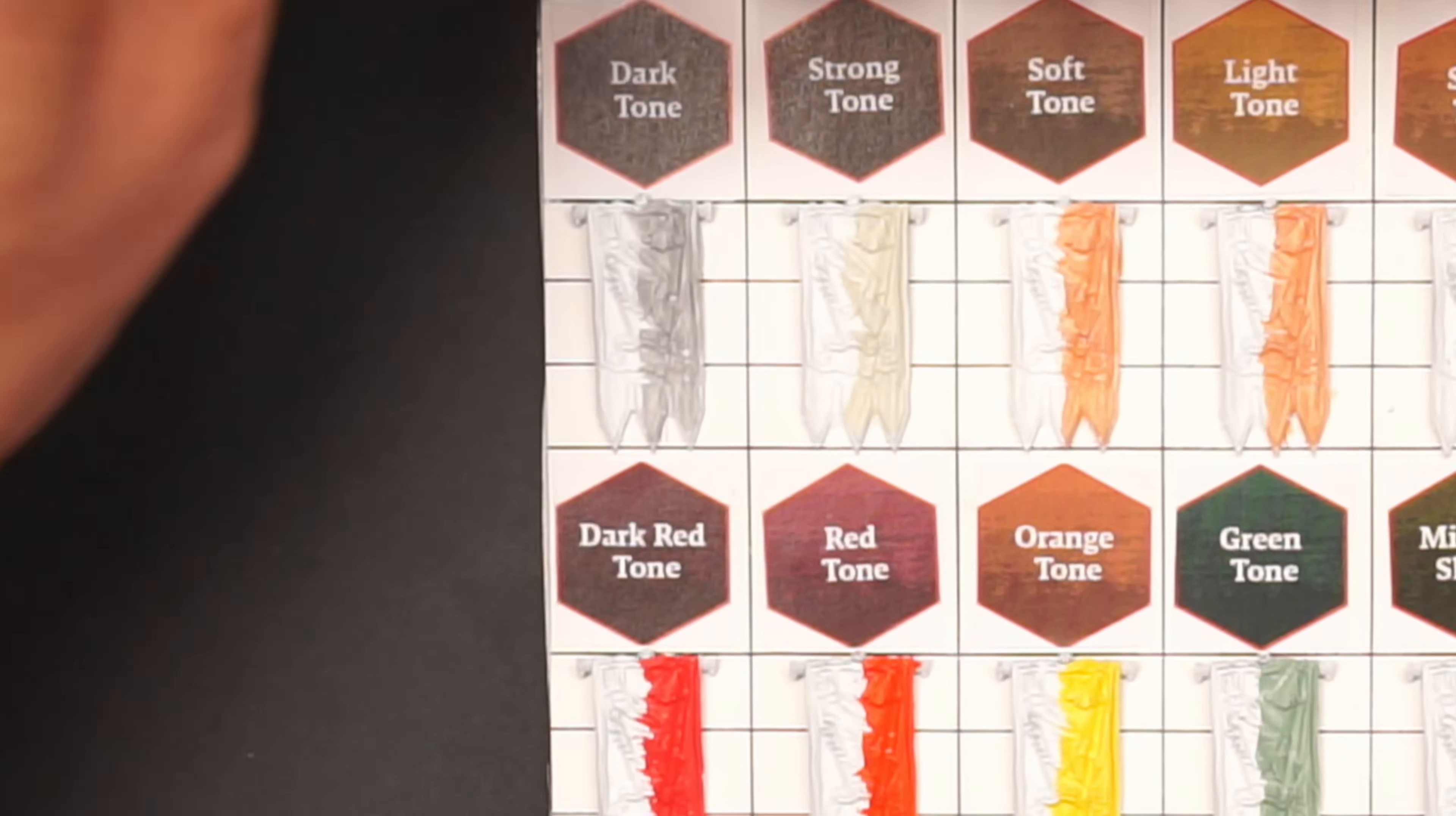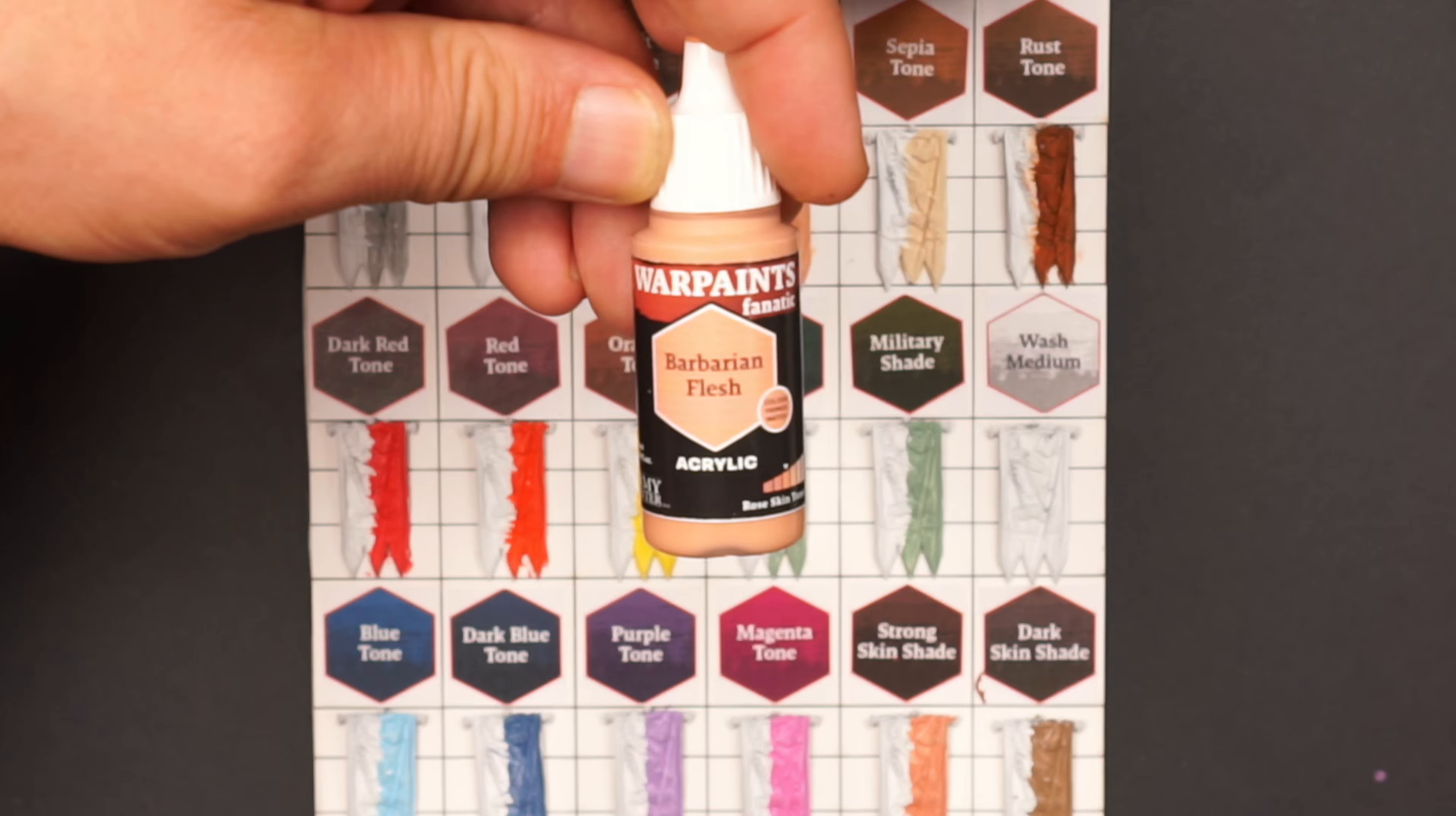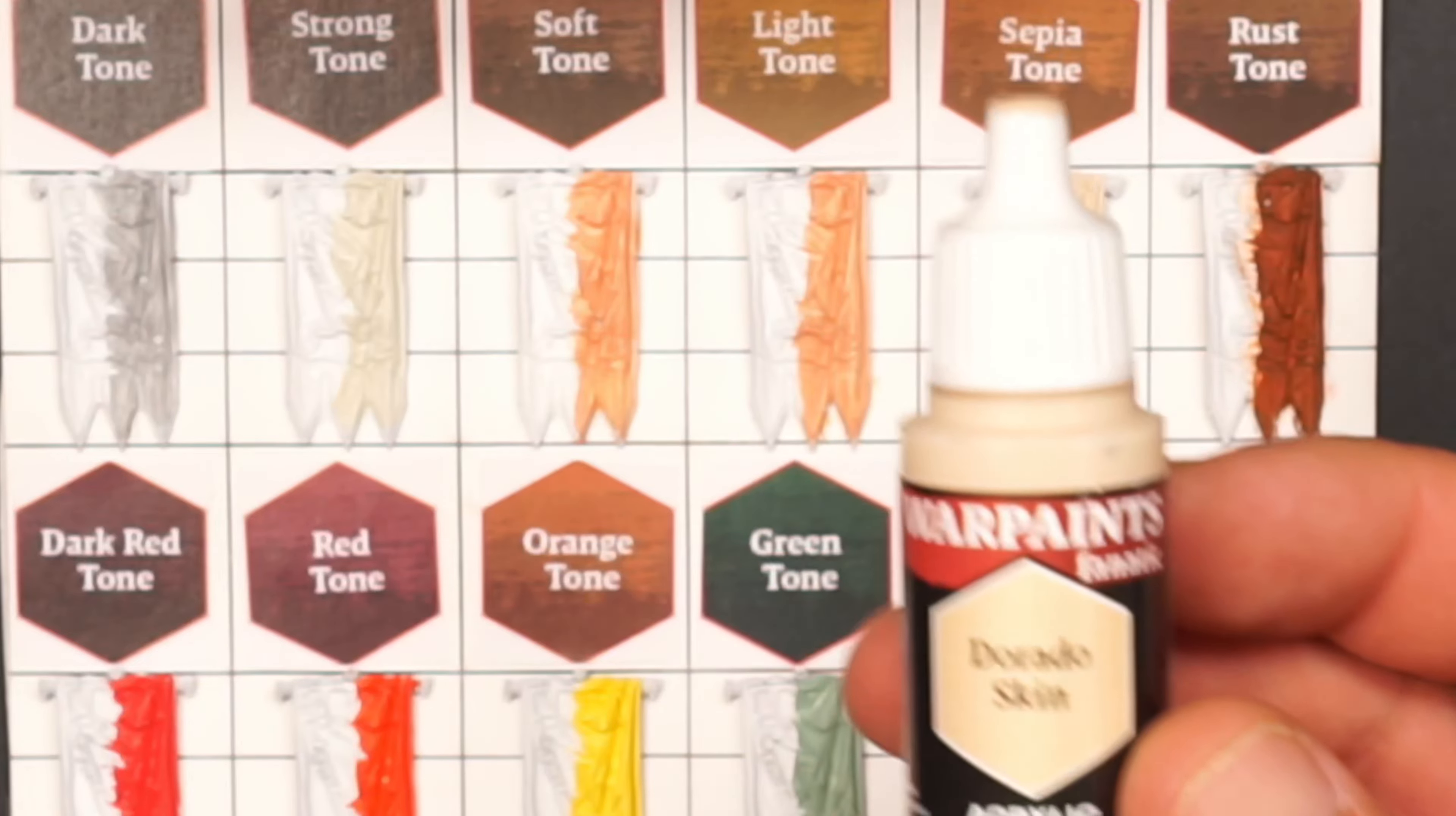The dark tone I will give an ash gray background. The worn stone for the strong tone, and the soft tone I used Barbarian Flesh. I also did that on the light tone, but I think this is the wrong color for these tones. However, this is how it is and I won't do it over. For the sepia tone I used the Dorado skin, and I think this is a very nice light color for this and it will work well.